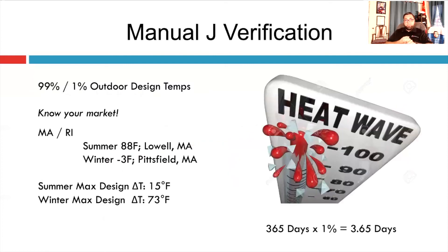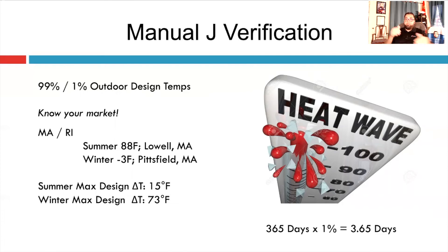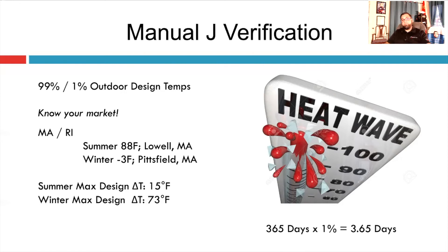Know your market. Most of you are working in the same area and should know your design temperatures. If you're in Massachusetts or Rhode Island, anything above a 15-degree delta in summer means you're oversizing the equipment. Anything more than a 73-degree delta in heating, even in Pittsfield, Mass, means you're oversizing. The highest cooling design temp is 88 in Lowell; the coldest heating temp is negative 3 in Pittsfield. Any temperatures above or below those extremes mean you're oversizing your system, and it won't meet code or rebate requirements.